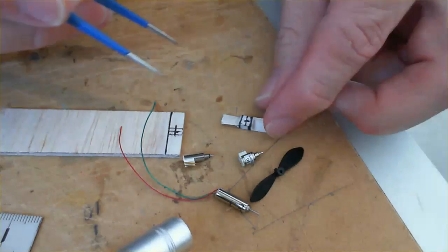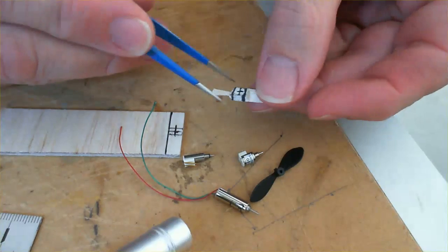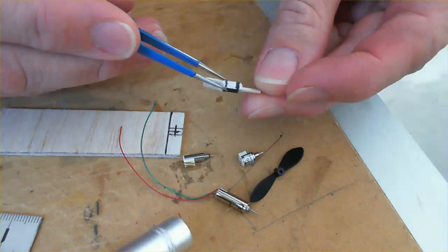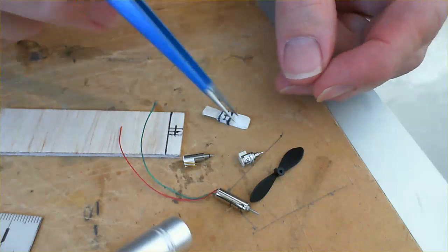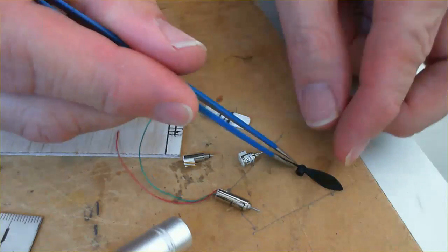Alright, so we're going to have a look at making propellers out of balsa wood, like this one here. We need to make our own propellers if the standard plastic propellers that we have are actually too big.